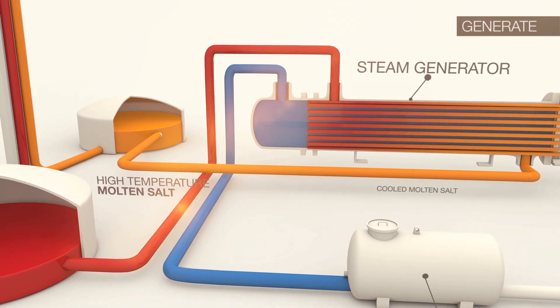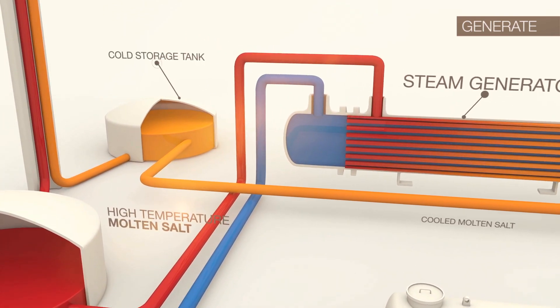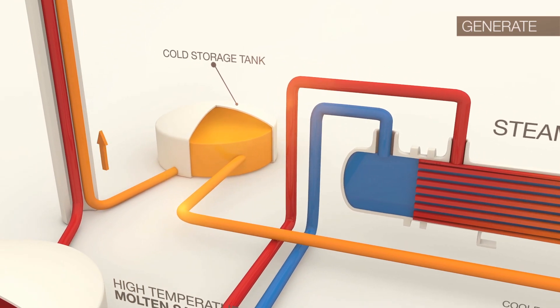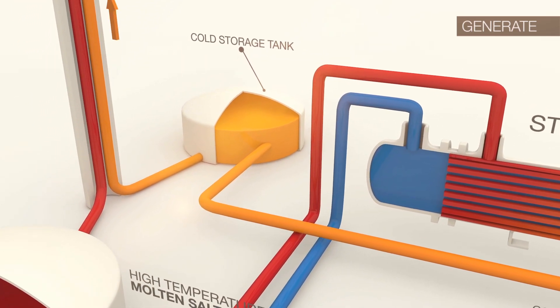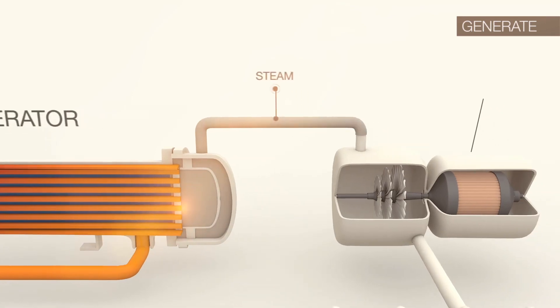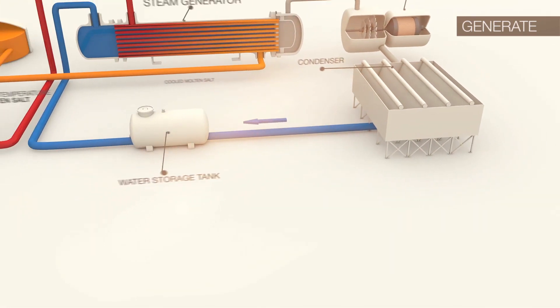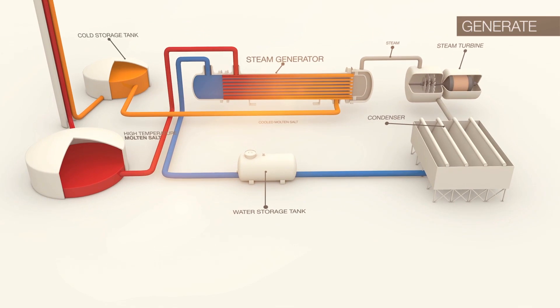Once the hot salt is used to create steam, the cool molten salt is then piped back into the cold salt storage tank where it will then flow back up the receiver to be reheated as the process continues. After the steam is used to drive the steam turbine, it is condensed back to water and returned to the water holding tank, where it will flow back into the steam generator when needed.